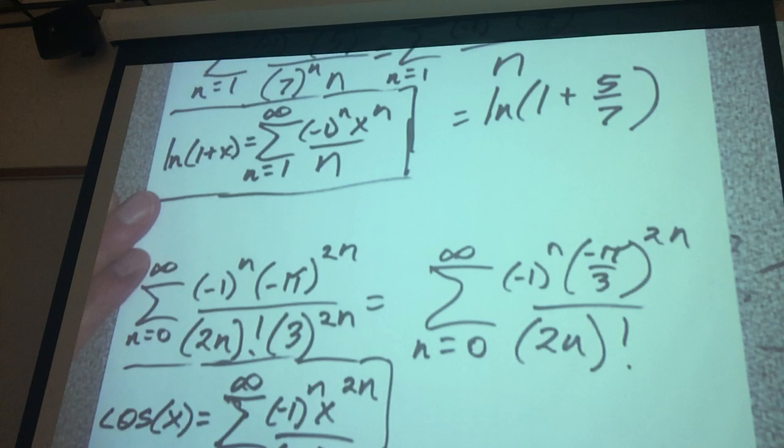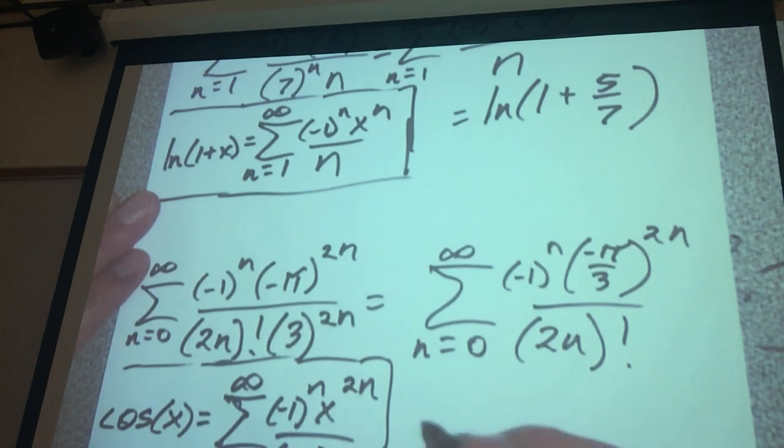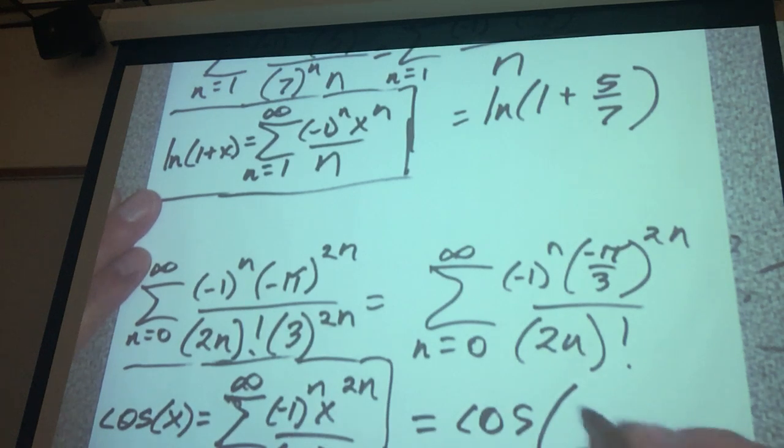That's just an identity that we're using right there. And so this thing right here would come out to cosine of negative pi over 3.